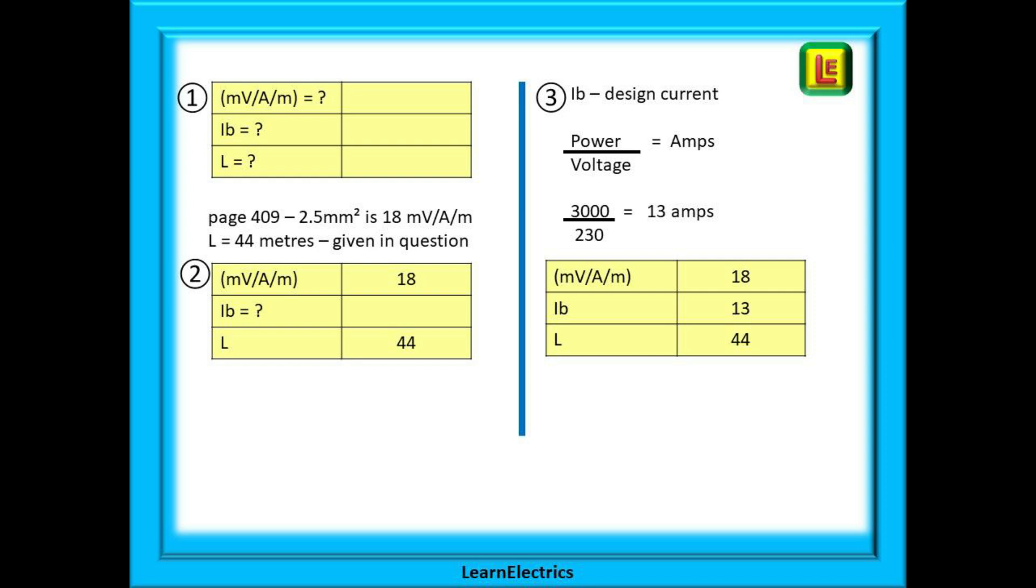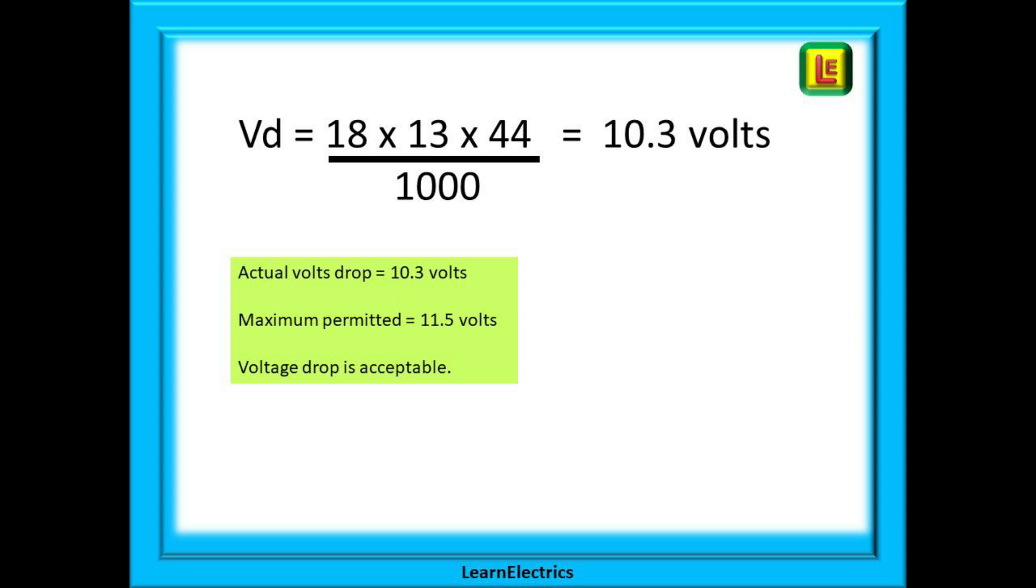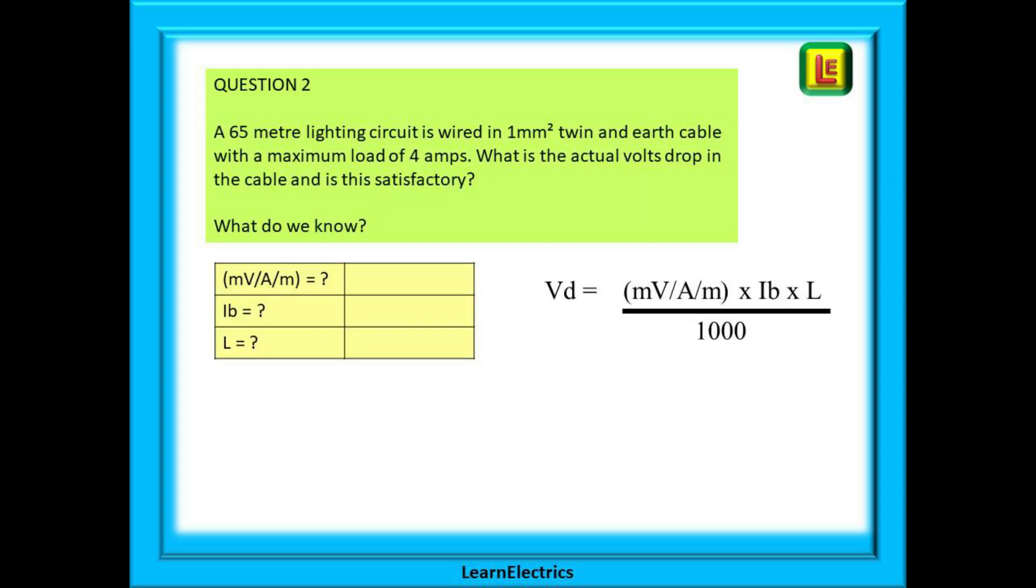3 kilowatts is the same as 3000 watts, so 3000 watts divided by 230 volts gives us 13 amps of current. We can enter this in the information box and move on to calculating the actual volts drop. The voltage drop will be 18 multiplied by 13 multiplied by 44 and divided by 1000, and the answer that pops out of the calculator should be 10.3 volts, give or take a very tiny amount. So our actual volts drop is 10.3 volts and the maximum permitted is 11.5 volts. Our actual volts drop is within the limits and it is acceptable. How easy is that?